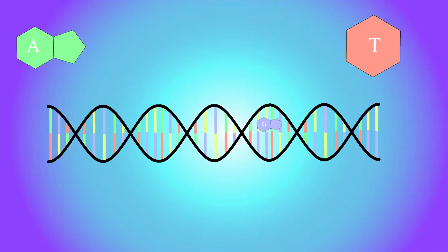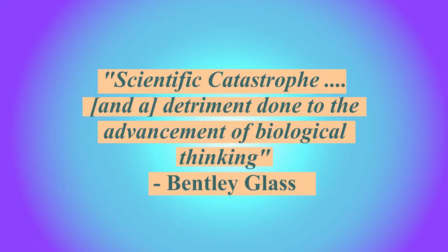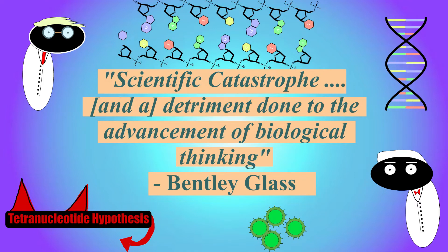This massive delay in discovering the chemicals that make up the code of life has been called a scientific catastrophe, and a detriment done to the advancement of biological thinking. So this is the story of how that catastrophe happened, and how it was eventually solved with the birth of molecular genetics.